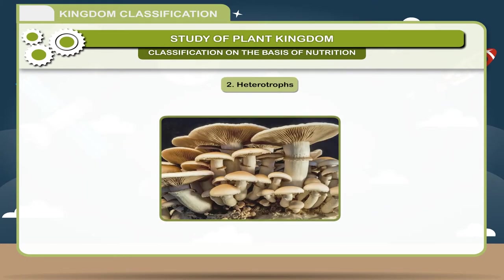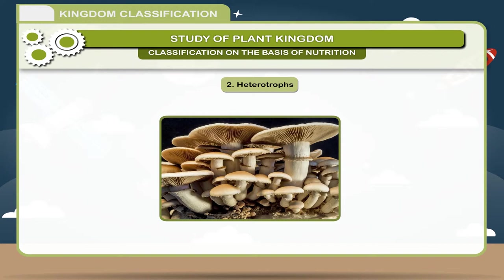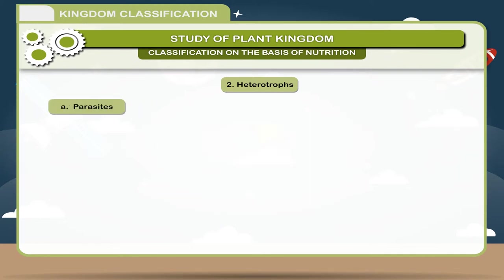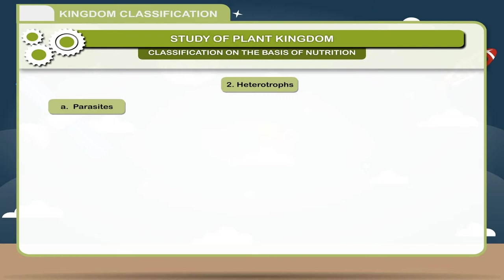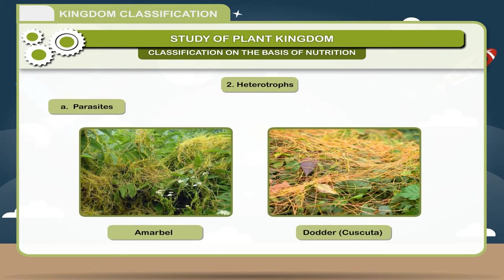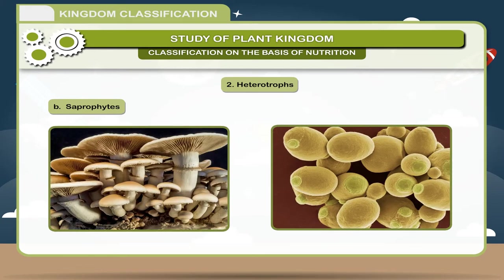2. Heterotrophs — these plants do not possess chlorophyll and depend on other dead or living organisms for their food. They are of two types. A. Parasites — those plants which depend on other living organisms for their food. Examples include Dodder (Cuscuta). B. Saprophytes — those plants which depend on dead or decaying organic matter for their food.